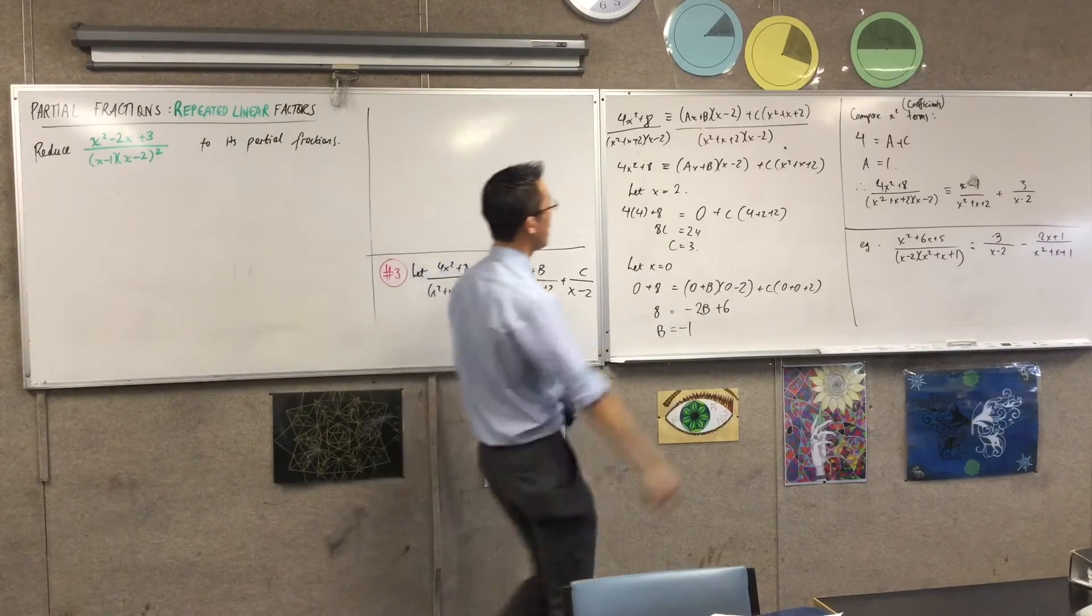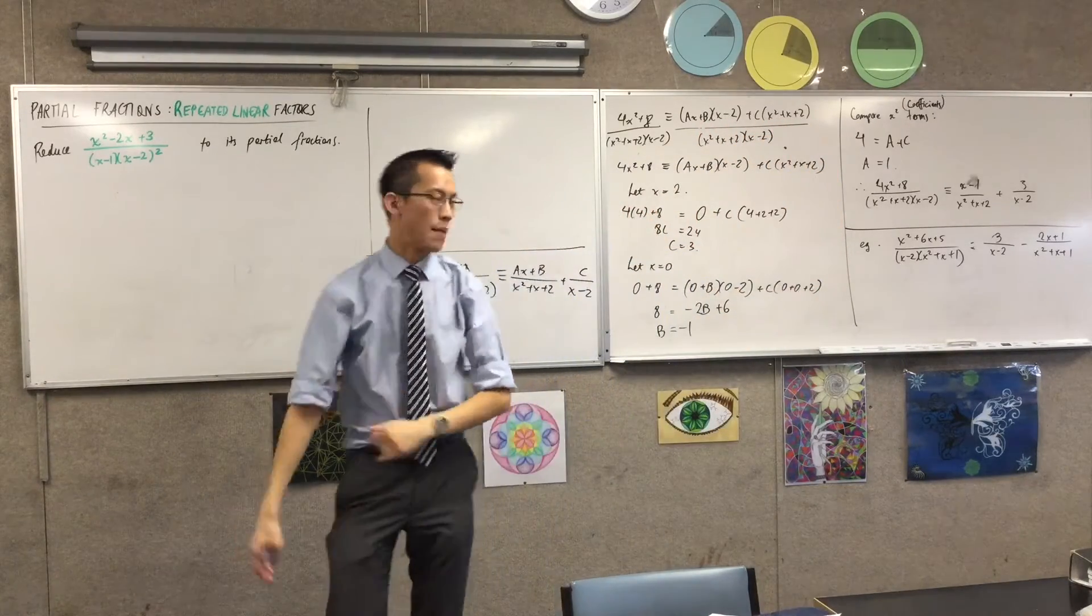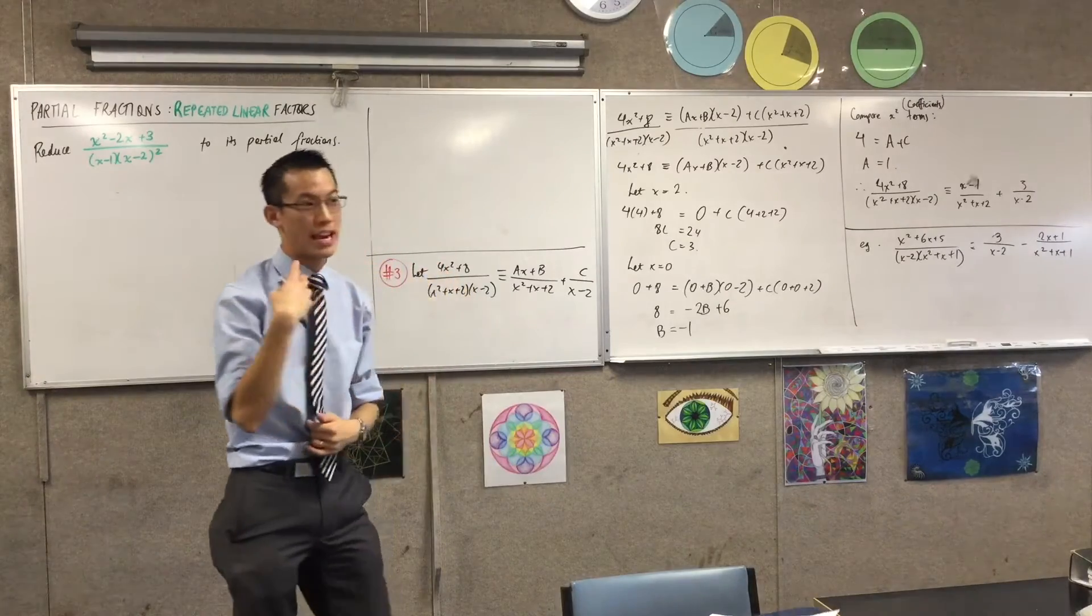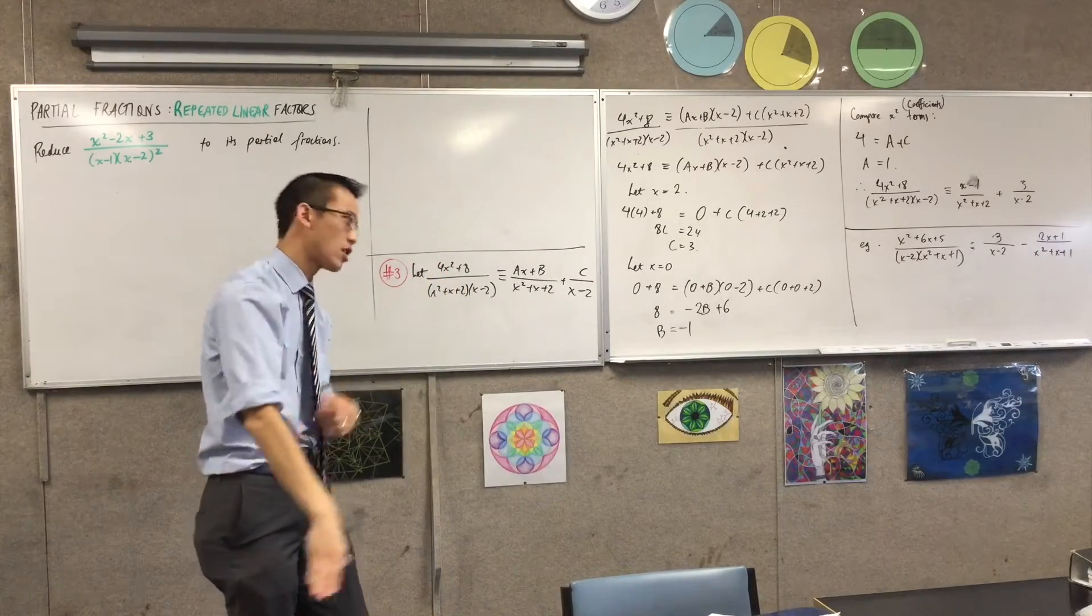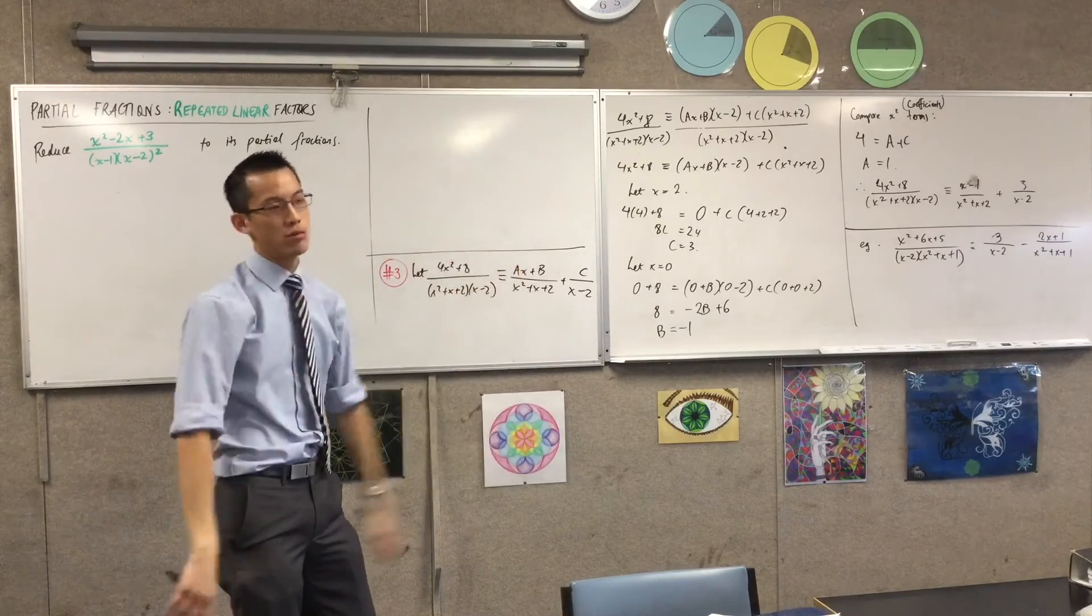The constant term can only come from here and here. But if you're doing anything in between, if for example the degree was x cubed, if you're doing the x squared terms or the x terms, you're going to have to be like, wait, which one is it? And almost certainly you'll forget.